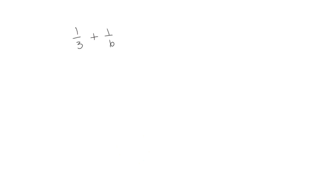Let's start with this number sentence: 1 third plus 1 sixth equals. We know that we can't add fractions together if the units are different, and in this one the units are different — we have thirds and we have sixths. So we need to change one of the fractions, or both fractions sometimes, so that they have the same denominators.